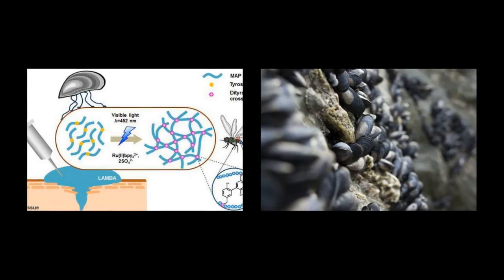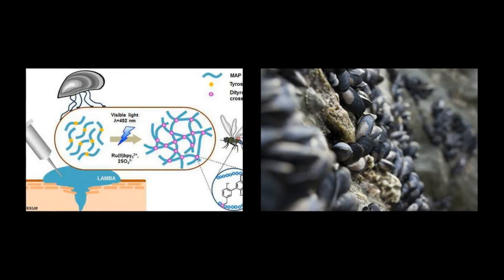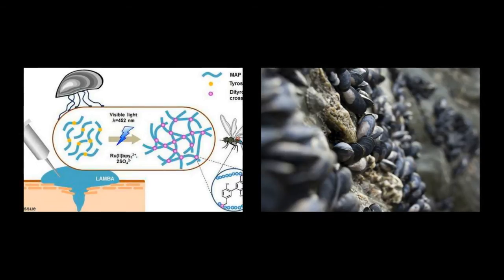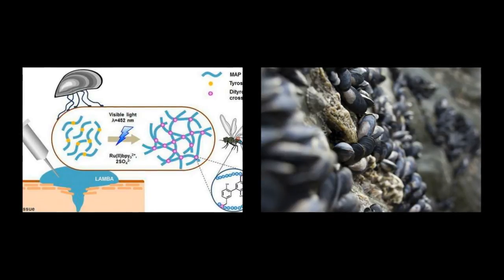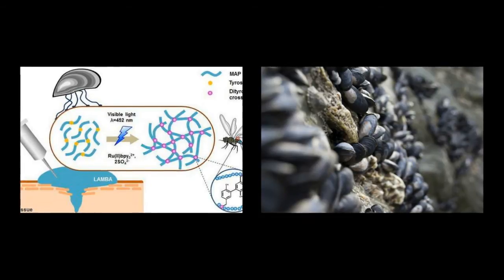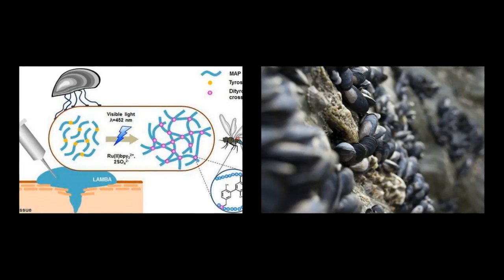Scientists at Pohang University of Science and Technology have taken a slightly different approach. Their solution was inspired by intersections of amino acids called tyrosines that can be found in dragonfly wings and insect cuticles. These are created by exposure to visible light.